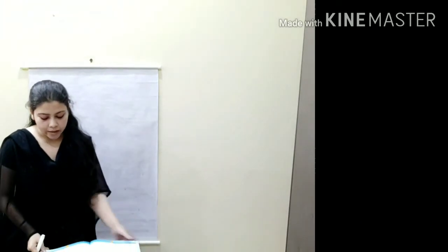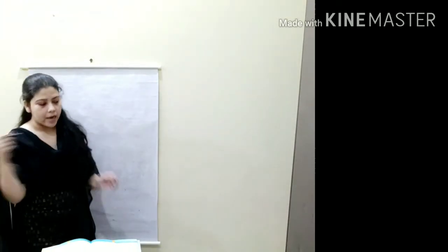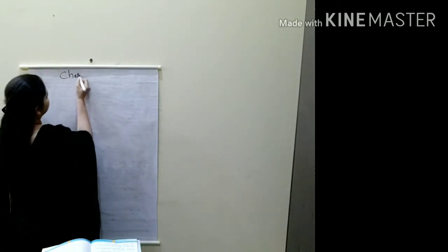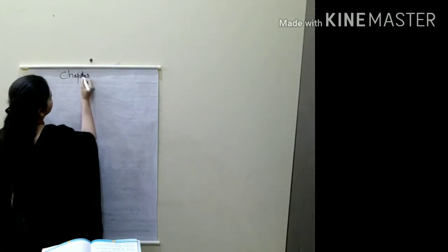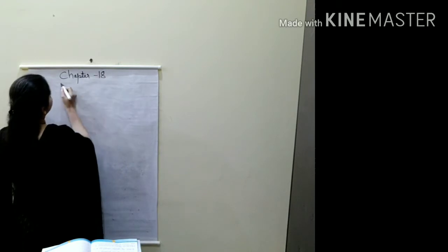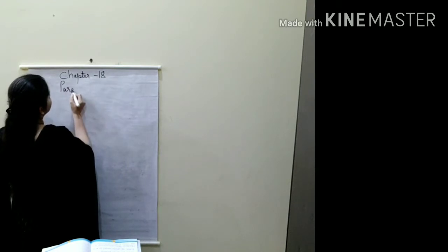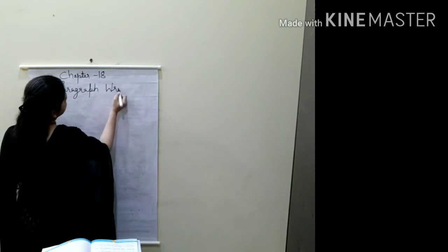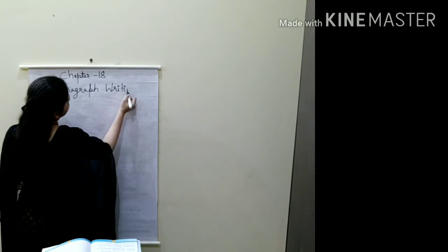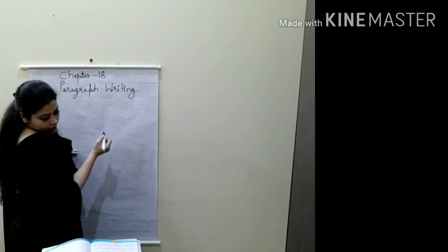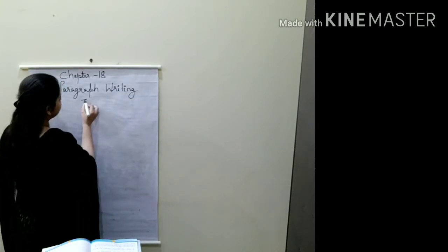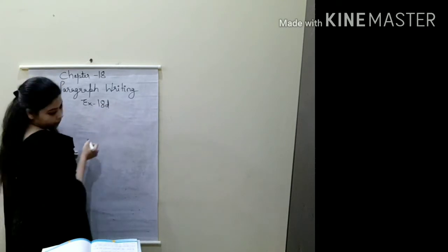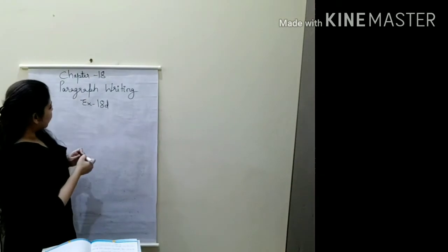Which exercise, children? Exercise 18D — paragraph writing. Chapter 18, paragraph writing. Exercise 18D. And what is the topic? Let's read the topic.